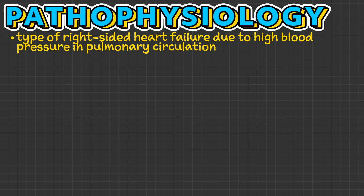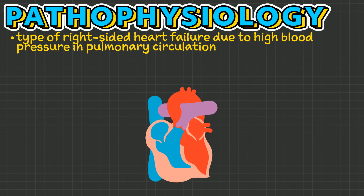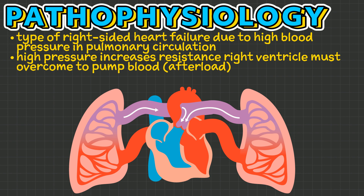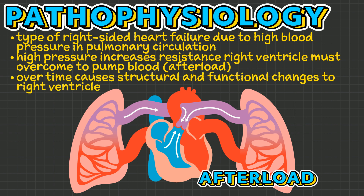Cor pulmonale is a type of right-sided heart failure that occurs due to high blood pressure within the pulmonary circulation. This high pressure increases the resistance that the right ventricle must overcome to pump blood, which is called afterload. Over time, this increased afterload causes structural and functional changes in the right ventricle, leading to cor pulmonale.